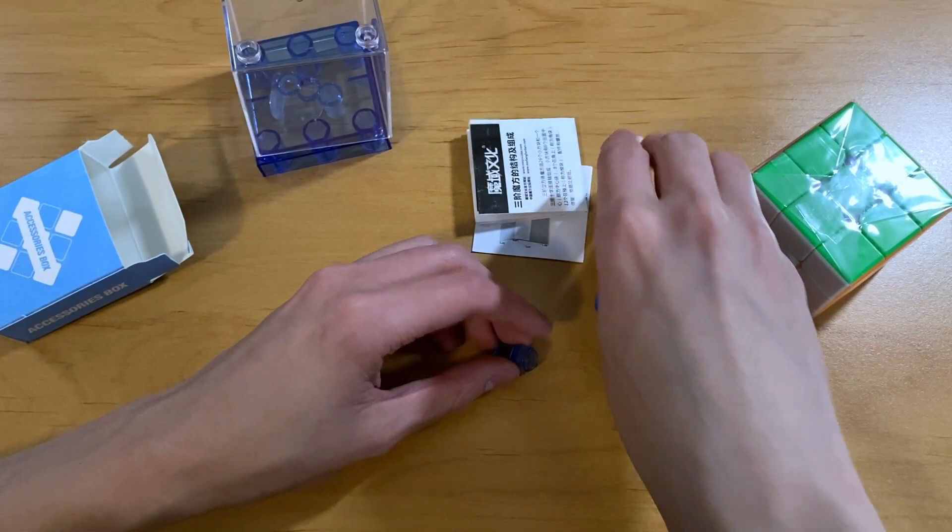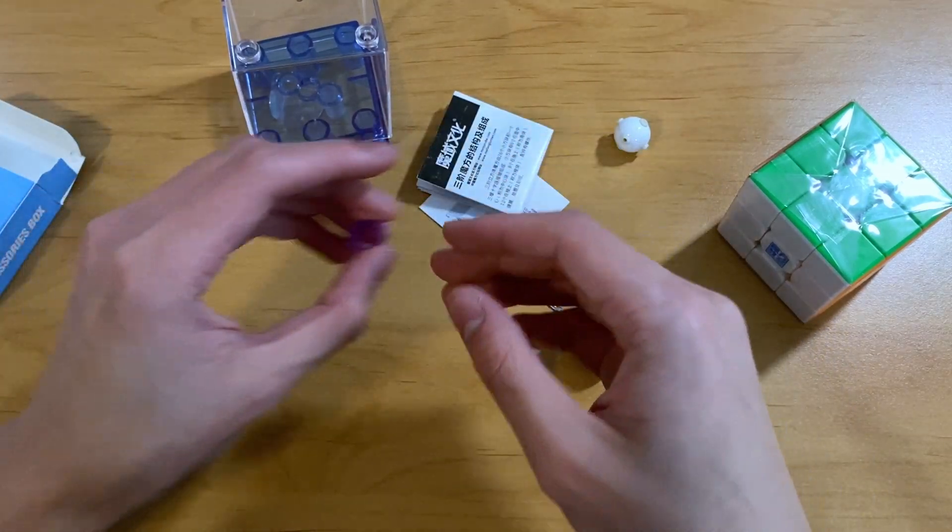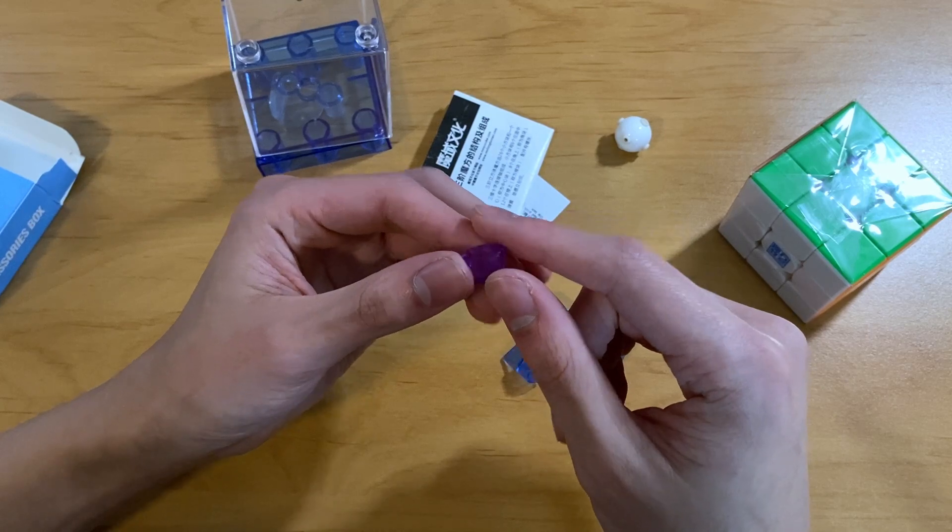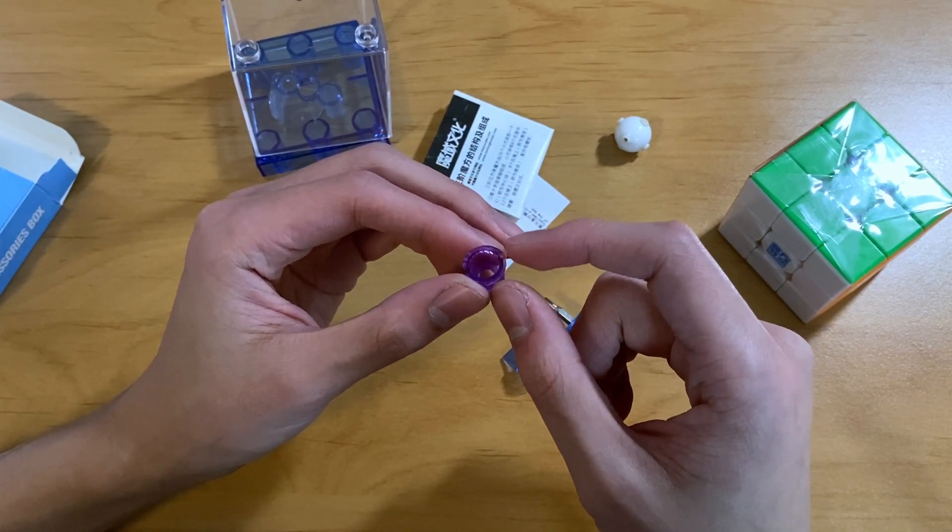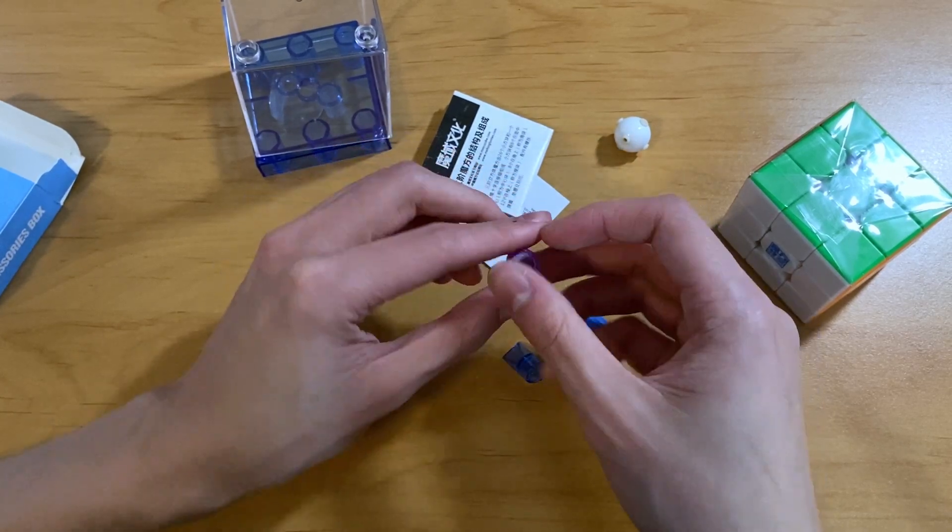And then we have a screwdriver and a tensioning tool. Oh, we also have this purple extra cylinder thing for spring compression. I guess these are purple now because they used to be blue.